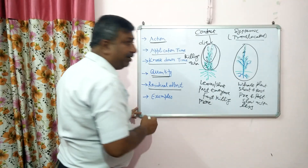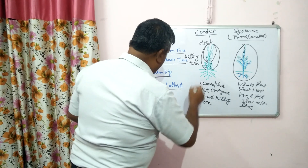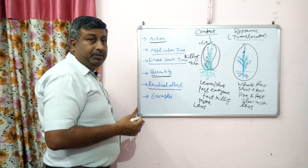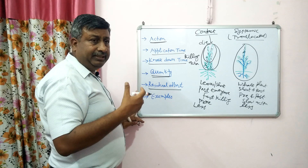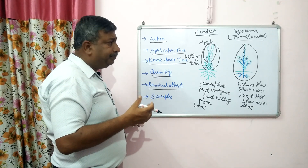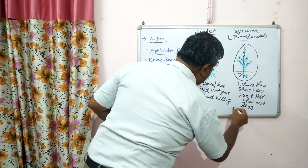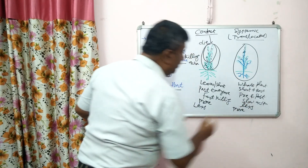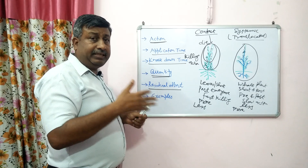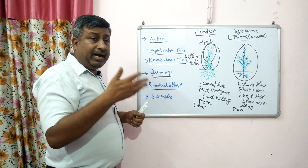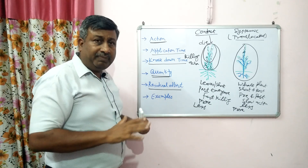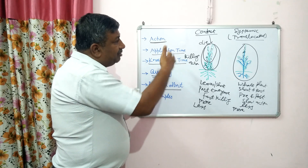Regarding residual effect — how long they remain viable and show toxicity — contact herbicides have very little residual effect. They detoxify quickly within one to three days and do not show residual effect in the soil. Systemic herbicides have more residual effect, sometimes lasting one season, two seasons, or even one year. Their toxicity can remain active in the soil and affect microorganisms and succeeding crops.